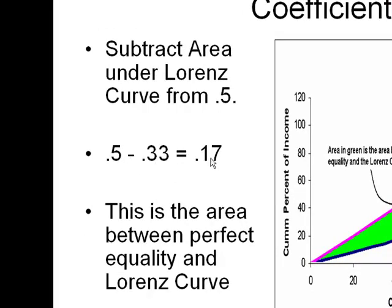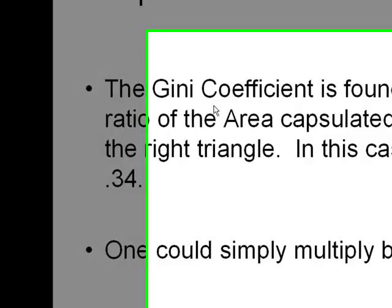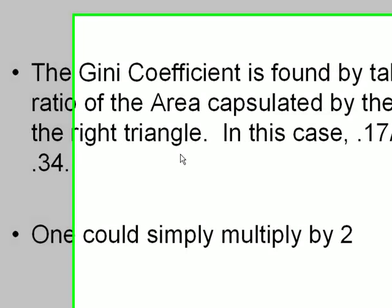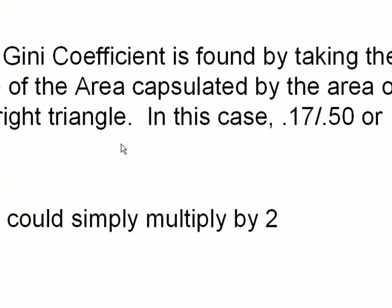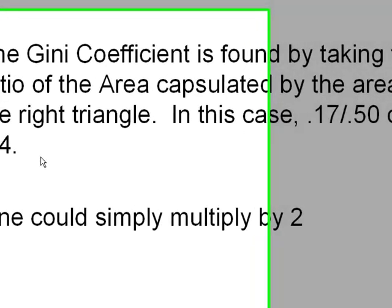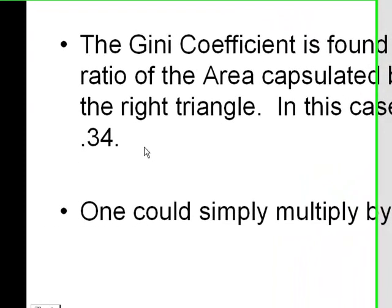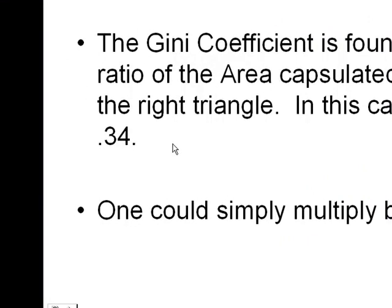Next, all I have to do to find the Gini coefficient is to take the area in green and divide it by 0.50, and I get 0.34. The Gini coefficient is the ratio of the area between the line of perfect equality and the Lorenz curve to the area of the right triangle. One could have simply multiplied the green area by 2.